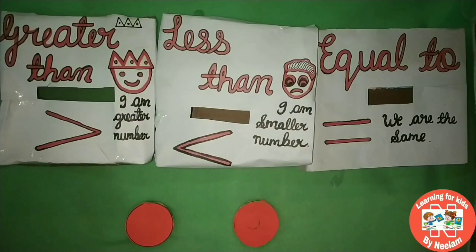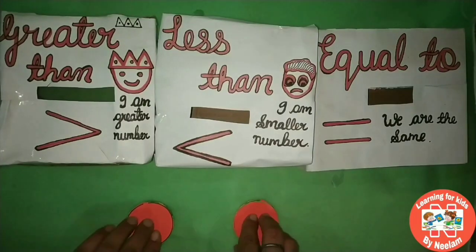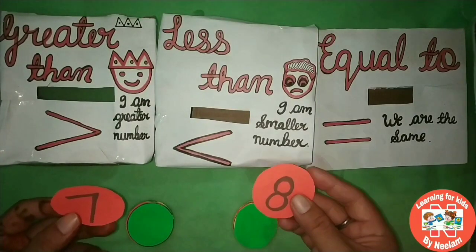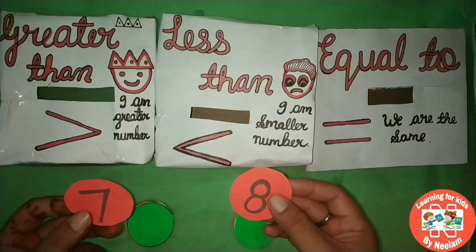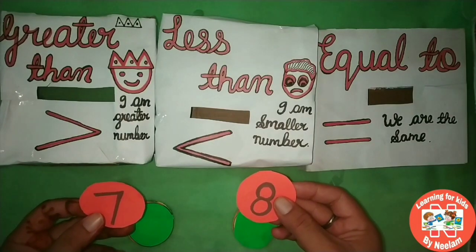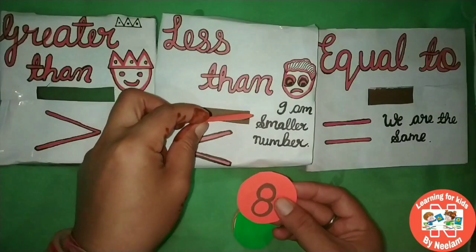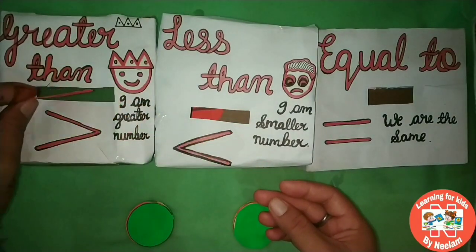This is 7 and this is 8. So, 7 is greater or 8 is greater? 7 is less than 8. So, 7 is the smaller number and 8 is the greater number.